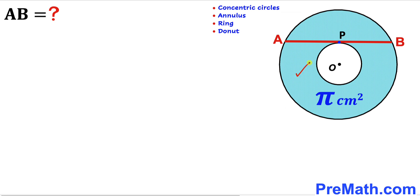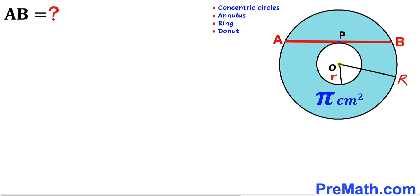The blue shaded region can be called an annulus, a ring, or sometimes a donut. Since we are dealing with two circles, I'm going to label the radius of the big circle as uppercase R and the radius of the smaller circle as lowercase r.